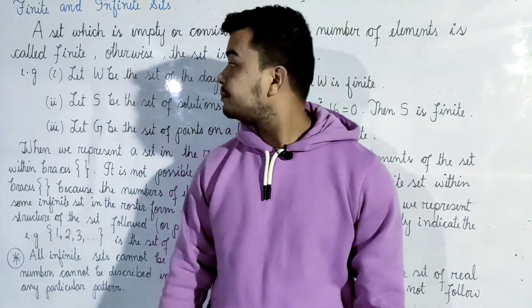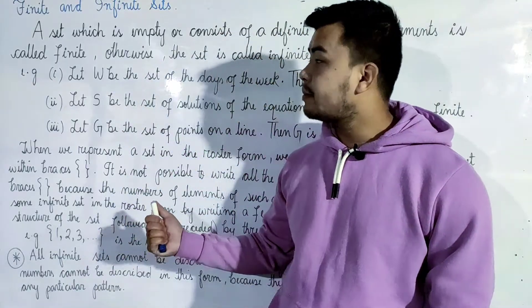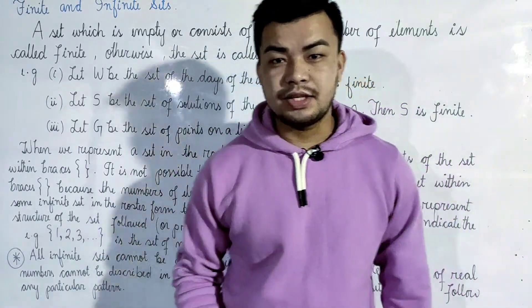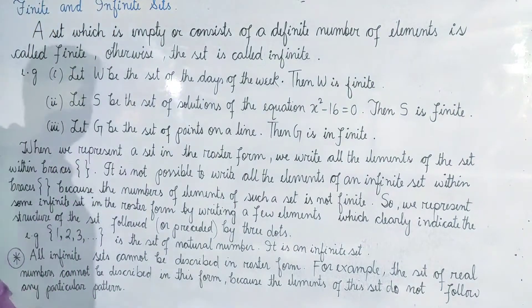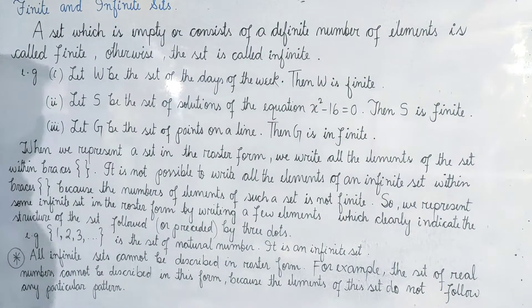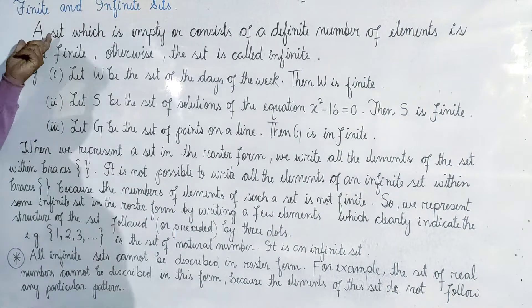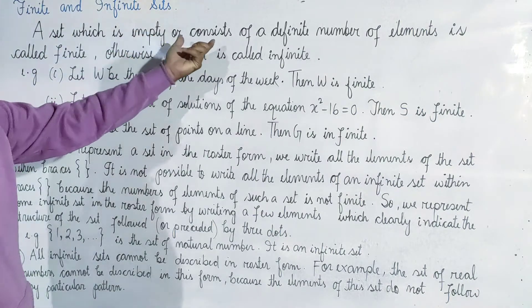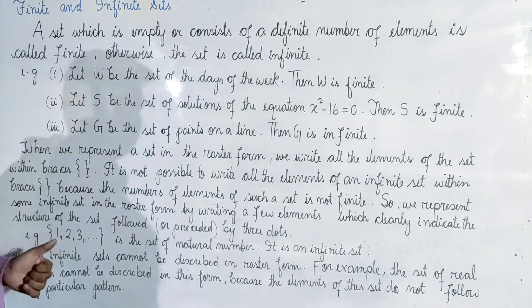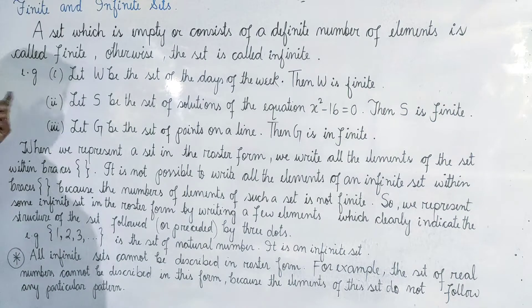What is the definition of finite and infinite sets? A set which is empty or consists of a definite number of elements is called finite.